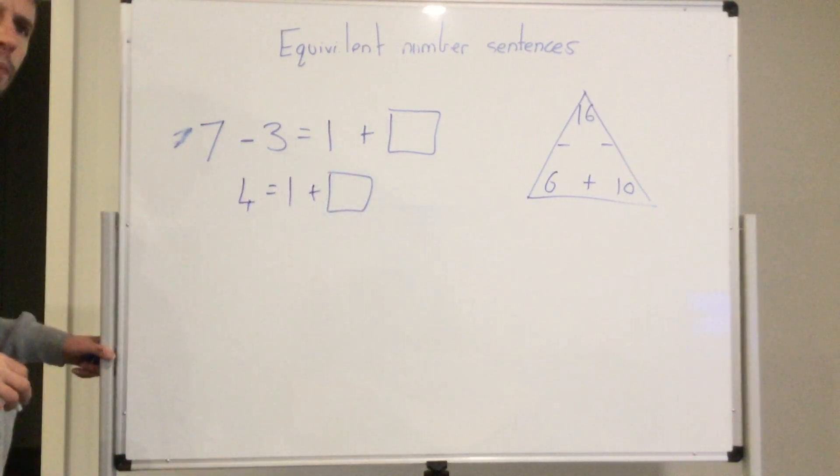The first thing I need to be thinking about is solving this side first. 7 take 3 equals 4. 1 plus 1 equals 4... 1 plus 3 equals 4. Let's go back and do another subtraction one.